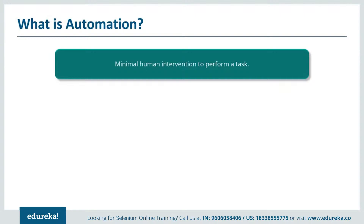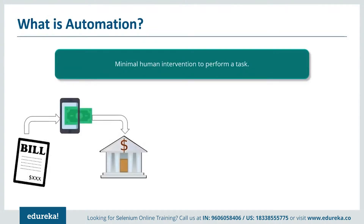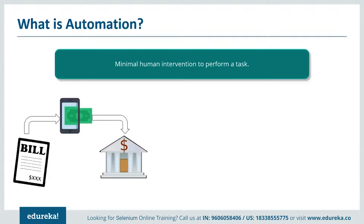Consider this example: suppose you want to pay a bill and the due date is very near, but you cannot physically go there and pay it. Technology has improvised so much that there is an option called automatic bill payment, where the amount to be paid is directly deducted from the respective account and the user can pick a date in that month for the firm to process the transaction.